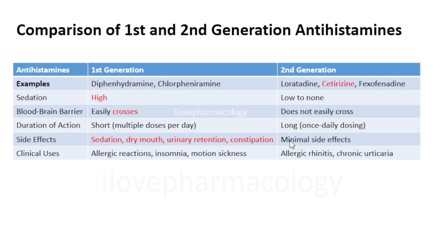Side effects of first generation antihistamines include sedation from crossing the blood-brain barrier, and dryness of mouth, urinary retention, and constipation due to anticholinergic effects. These side effects are minimal or absent with second generation antihistamines. Clinical uses of first generation include treating allergic reactions, urticaria, insomnia, and motion sickness — for example, promethazine. Second generation antihistamines are more useful for allergic rhinitis, common cold, and chronic urticaria.